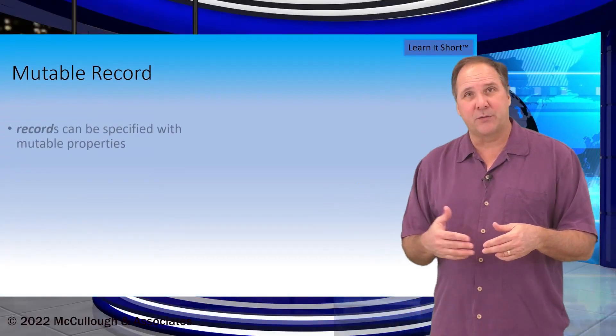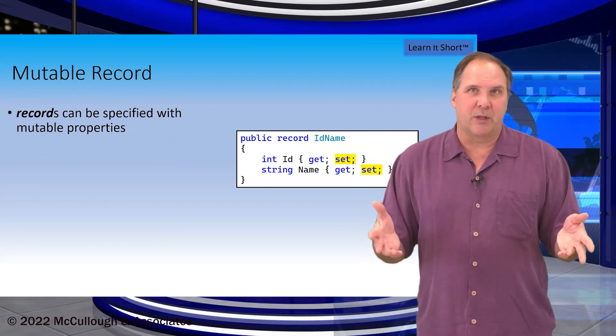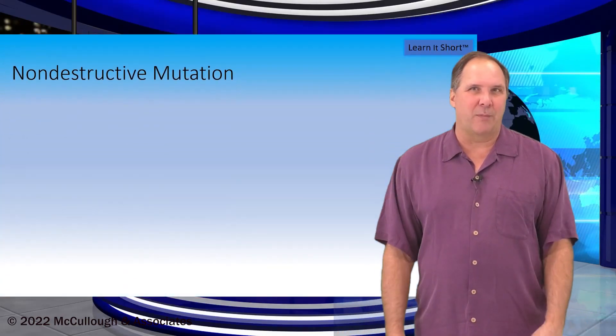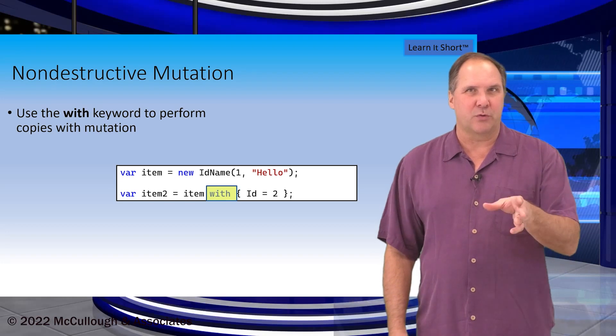Records can also be specified with mutable properties by creating the public setter as you can see in this example. However it's much more common to use immutable objects when we use records.